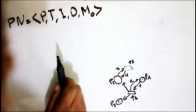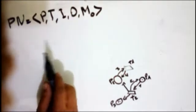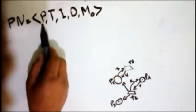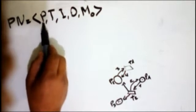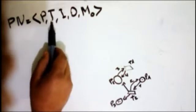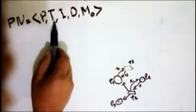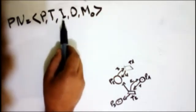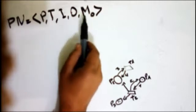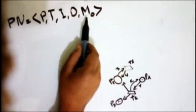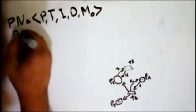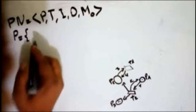Let's get started. A Petri Net is a 5-tuple where P is a set of places, T is a set of transitions, I is the input matrix, O is the output matrix, and M0 is the initial marking. Let's see an example. In our example, P is equal to the set of places.